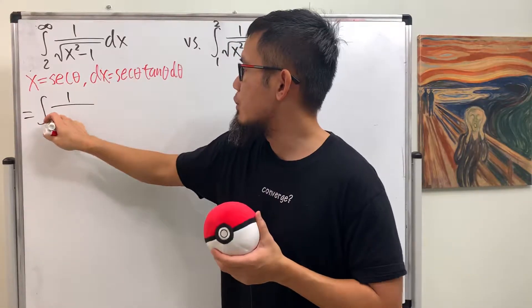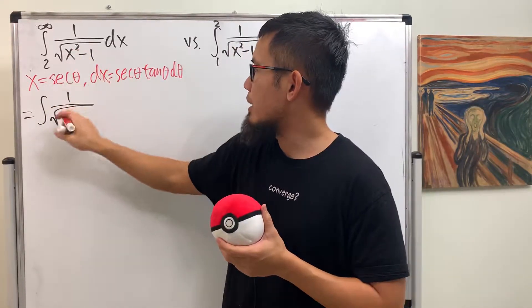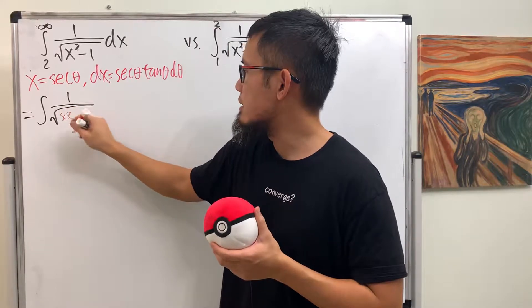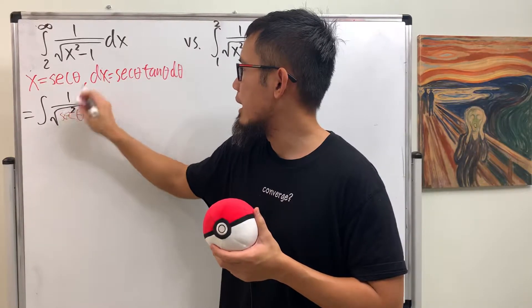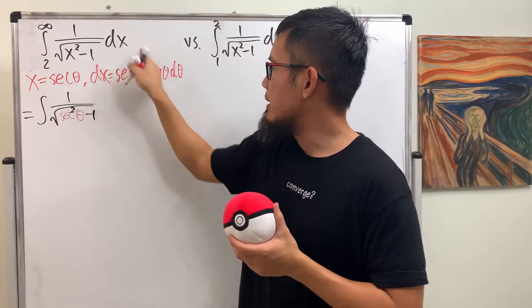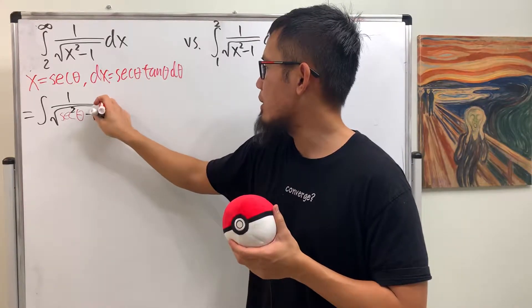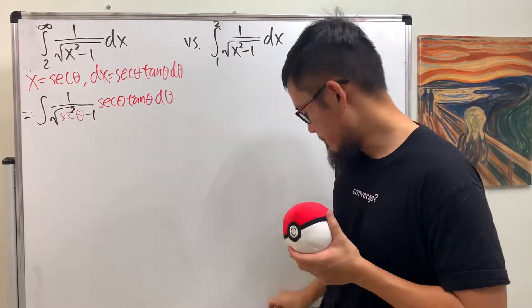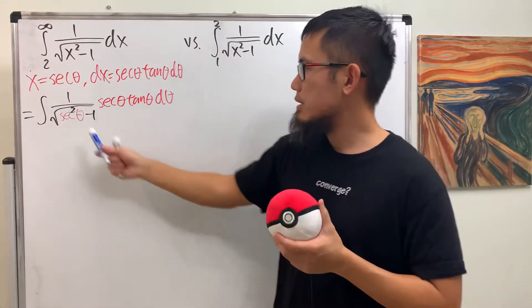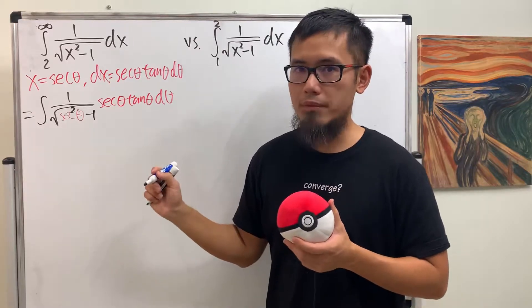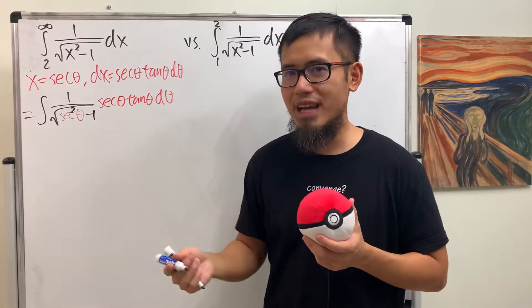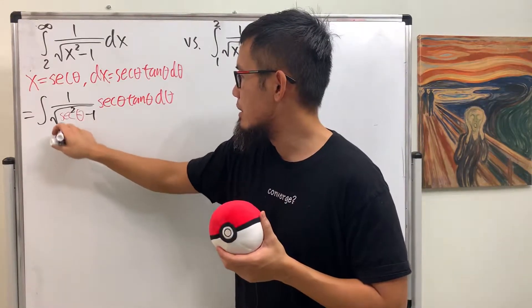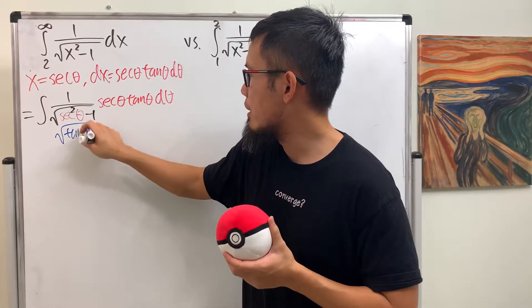Here we have 1 over square root of, and this right here is secant theta, and we have that being squared, and then we have the minus 1, and the dx is all that, so I will just write down secant theta tangent theta d theta, like so. What's secant squared theta minus 1? Tangent squared theta. So this is just square root of tangent squared theta.